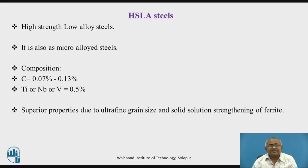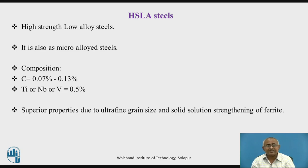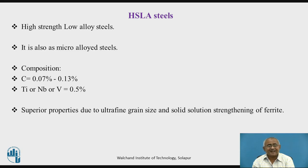But if we add a little amount of titanium, niobium, or vanadium into these steels — around 0.5 percent — such steel is called micro-alloyed steel. Due to that, this steel becomes superior in properties, because titanium, niobium, and vanadium are grain refining elements. They not only improve the strength and hardness, but they also refine the grain structure, dissolve in ferrite, strengthen the ferrite, and give the steel an ultra-fine grain structure.